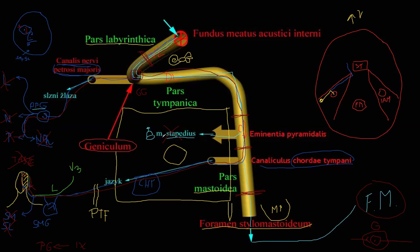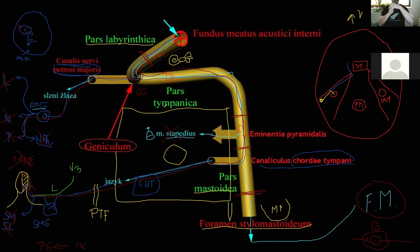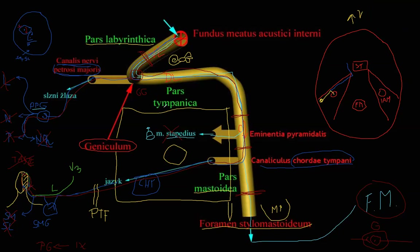Let's review the branches again. The stapedius muscle function: the chain of ossicles — malleus, incus, stapes — moves when a sound wave hits the eardrum. The stapedius muscle holds the stapes, reducing the intensity of transmission so you do not hear too loudly. After a concert, you may feel that you don't hear well for a while, because the stapedius muscle remains reflexively contracted, restraining the inner ear hair cells from noise damage.